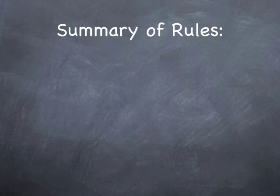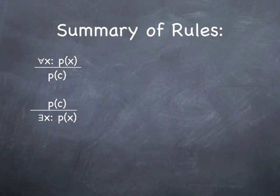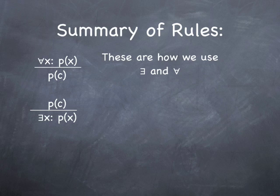So here's a summary of the rules. If you see for all x such that p of x, you can replace it with p of c, where c is any proper name whatsoever. And similarly, if you see p of c, where c is any proper name whatsoever, you can replace it with there exists x such that p of x. This is just how we use these two funny-looking symbols, exists and for all.